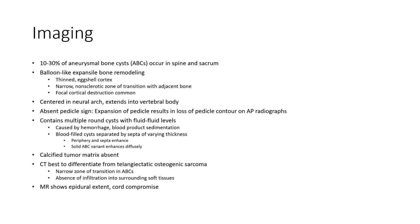Aneurysmal bone cyst variants show enhancement. A calcified chondroid matrix is absent. It is important to differentiate from telangiectatic osteosarcoma. Aneurysmal bone cysts show a narrow zone of transition and absence of infiltration into surrounding soft tissue, with assessment of epidural extent and cord compromise.